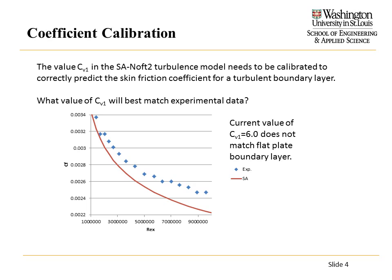For argument's sake, say you programmed your own SA-E2 turbulence model and it doesn't match experimental data. The parameter responsible for the skin friction coefficient is the CB1 parameter, and we need to calibrate it to match experimental data. We can use the coefficient calibration aspect of DAKOTA to accomplish this.